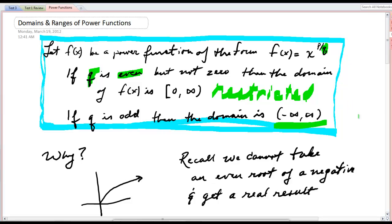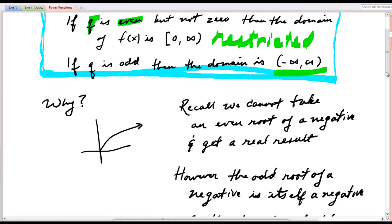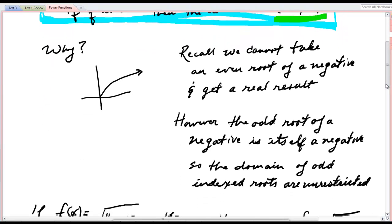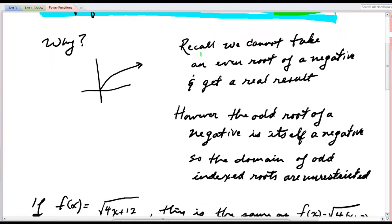Now, why is that? Well, let me remind you of some stuff we did in Chapter 2. And here it is. Why? Recall that we cannot take an even root of a negative and get a real result.